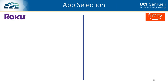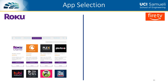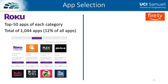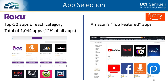We selected apps by crawling the respective app stores of the two platforms. For Roku, we first reverse-engineered the REST API of its app store, then crawled the app store to get metadata for all available apps. We selected the top 50 apps of each category, leaving us with about a thousand apps, or approximately 12% of all available Roku apps. For Fire TV, we crawled Amazon's list of top featured apps page by page until we reached about a thousand apps, which is approximately 25% of all available Fire TV apps.